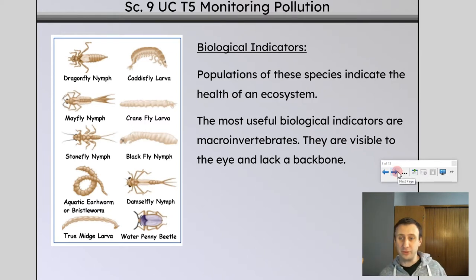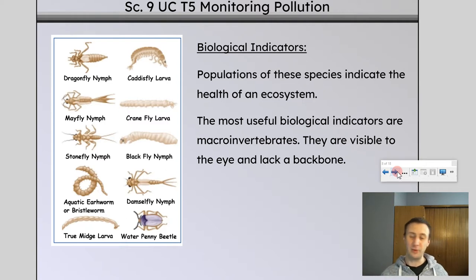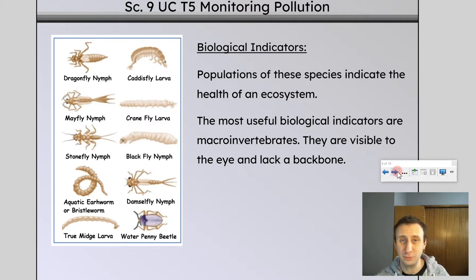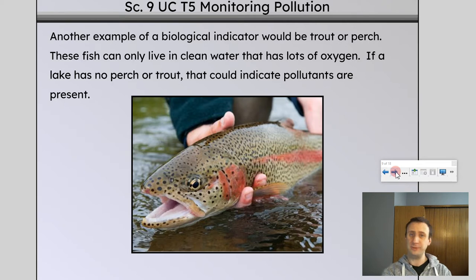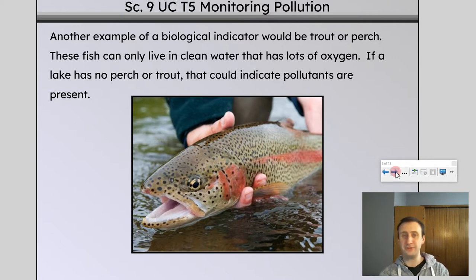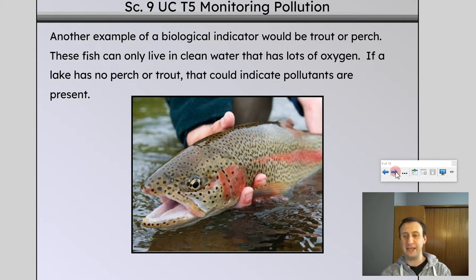For example, we could go to the Medicine Hat River, and if it wasn't frozen over, we could take a sample from the rocks on the bottom and count some of these organisms. That could tell us what the oxygen content is like. Another example of a bioindicator species would be trout or perch — if you find trout or perch in an aquatic ecosystem, that means it's pretty healthy because those particular fish take a lot of oxygen to survive.